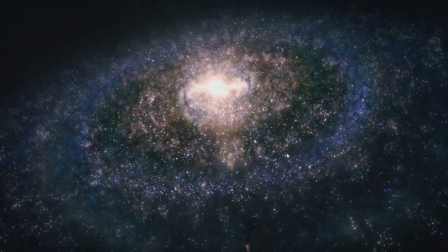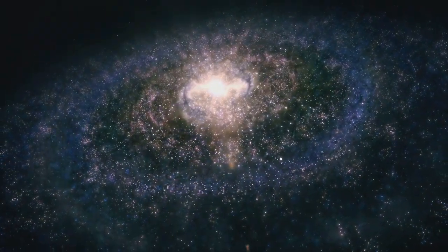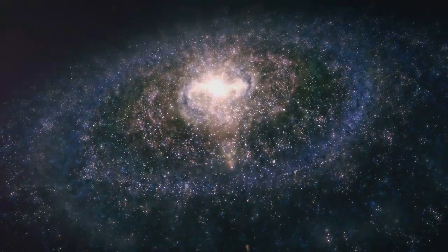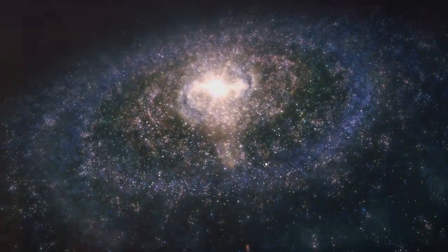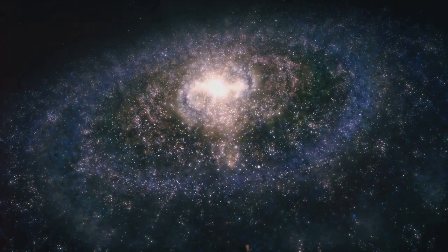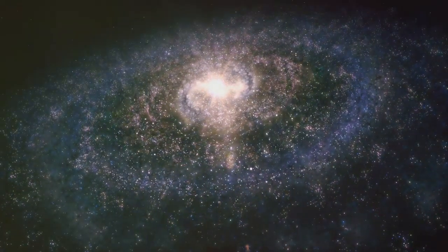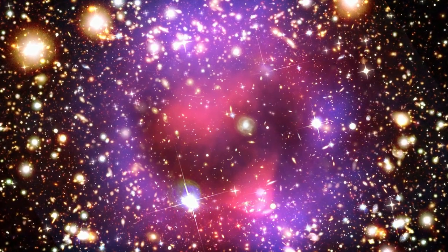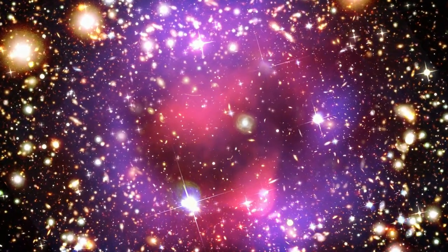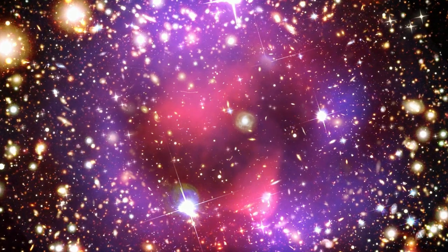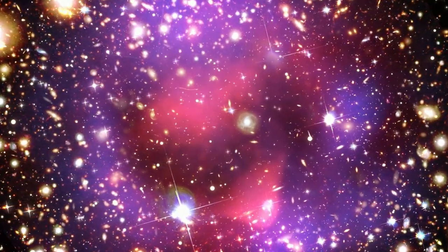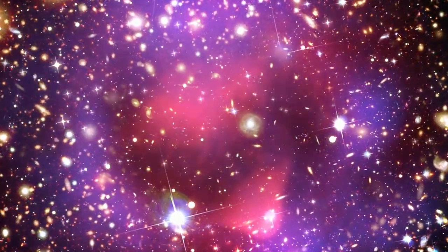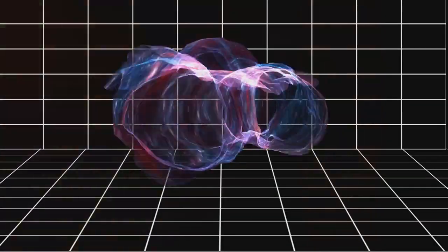Consider this: the universe is a stage so vast that our minds struggle to grasp its sheer scale. It's estimated to be about 93 billion light years in diameter, a number so colossal it's practically incomprehensible. Now imagine this: the parts of this universe we can observe—the galaxies, stars, and planets—make up merely about 5% of it. The rest, a staggering 95%, is made up of dark matter and dark energy.